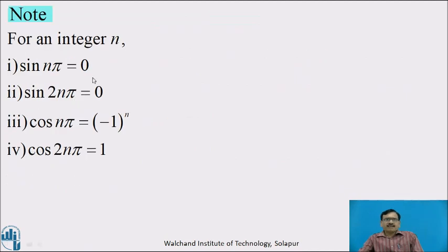Note: for an integer n, sin(nπ) = 0, sin(2nπ) = 0, cos(nπ) = (−1)ⁿ, and cos(2nπ) = 1.